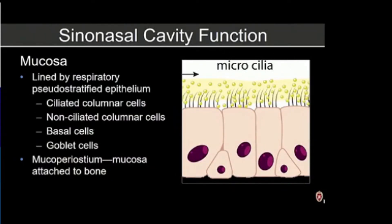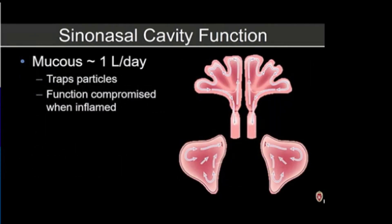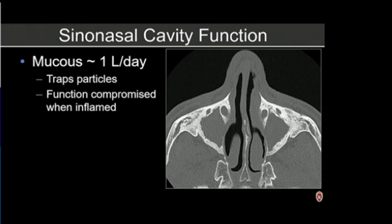The sinonasal cavity is lined by respiratory pseudostratified epithelium, composed of four different types of cells: ciliated and non-ciliated columnar cells, basal cells, and goblet cells. Together they attach to the bone and form the mucoperiosteum. The cilia beat toward the ostia through the paranasal sinuses, and these cells produce about one liter of mucus per day, trapping particles. That function can be compromised when inflamed, as seen in this example where the maxillary sinuses are chronically opacified with thickening of the osseous walls in a patient with cystic fibrosis.